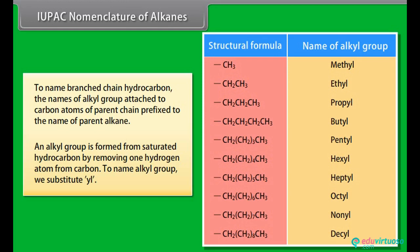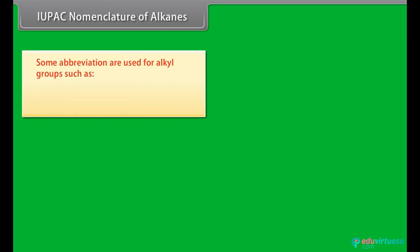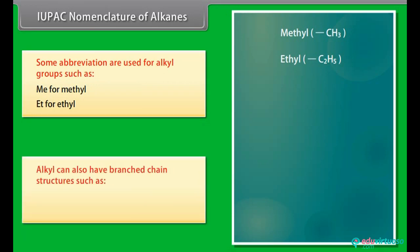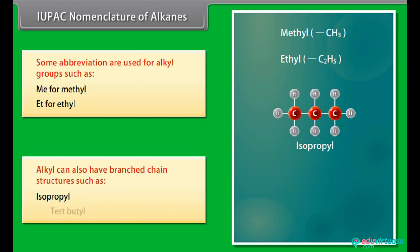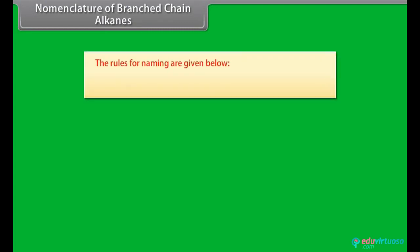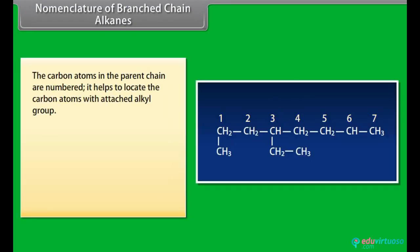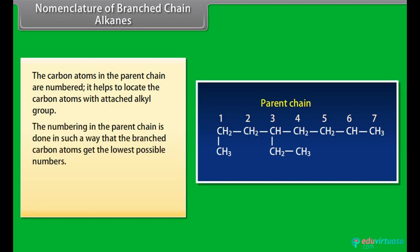An alkyl group is formed from a saturated hydrocarbon by removing one hydrogen atom from carbon. To name an alkyl group, we substitute -yl. Some abbreviations are used for alkyl groups such as Me for methyl and Et for ethyl. Alkyl groups can also have branched-chain structures such as isopropyl and tert-butyl. Rules for naming branched-chain alkanes: first, identify the longest chain of carbon atoms in the molecule. The carbon atoms in the parent chain are numbered to locate the carbon atoms with attached alkyl groups. The numbering is done so that the branched carbon atoms get the lowest possible numbers.